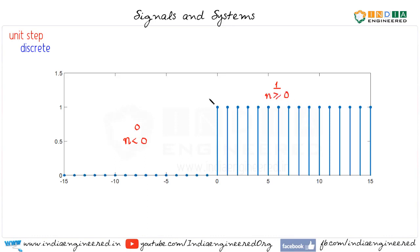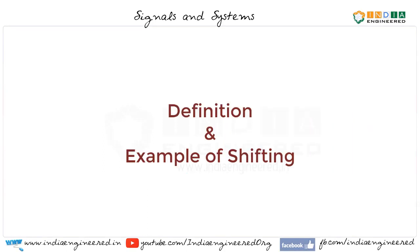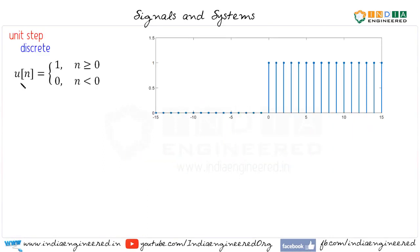Let's see its mathematical definition now. The value of u(n) is 1 for n greater than or equal to 0 and it is 0 for n less than 0.